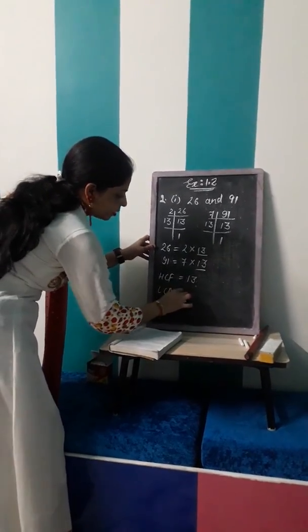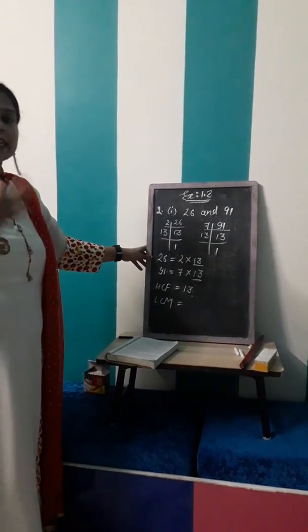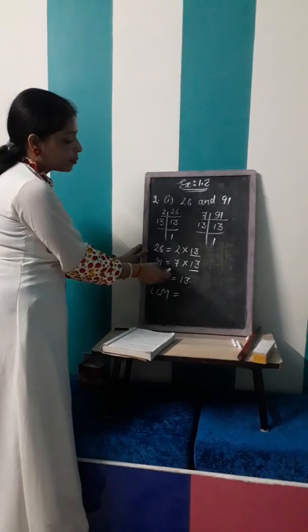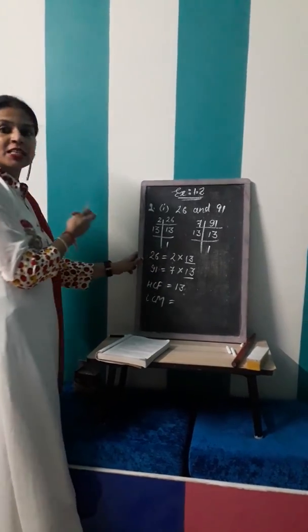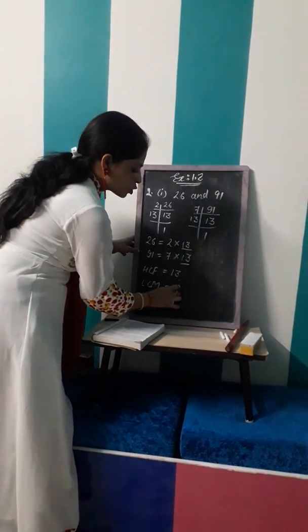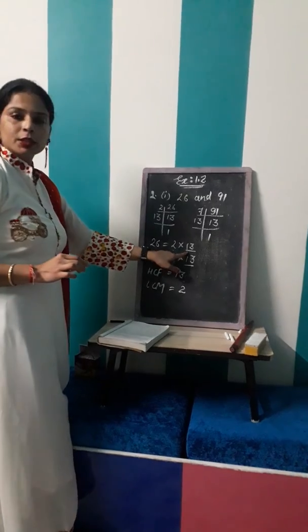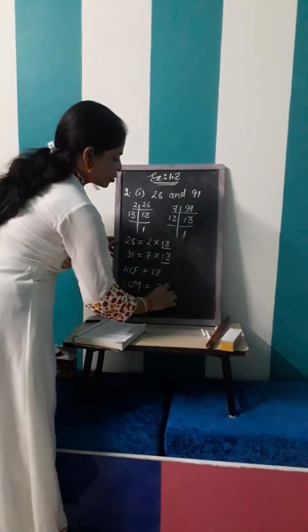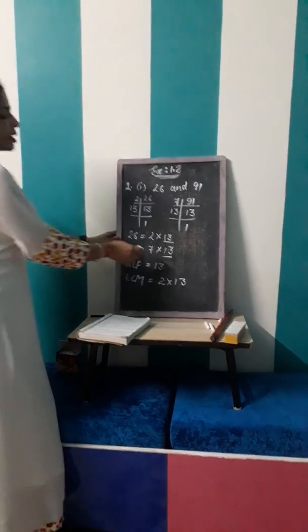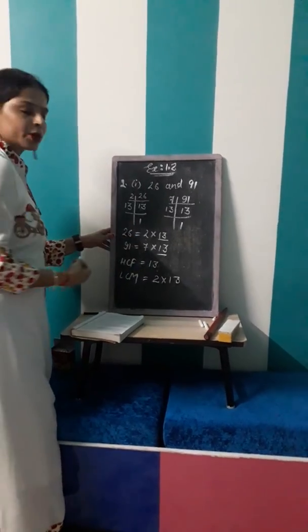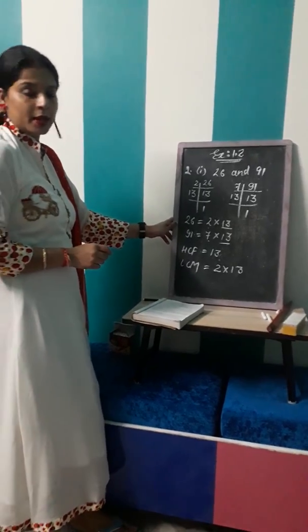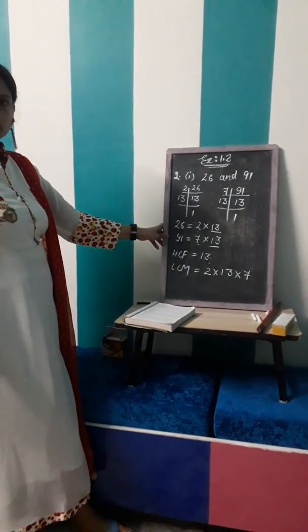So LCM, LCM is the least common multiple, right? So you can see that 2, here it is 1 times, and here it is not, so the maximum times is 1 times. Now we will talk about the 13, here it is 1 times and here it is 1 times, so 1 times is the maximum. And 7, here it is 1 times, so 1 is the maximum. So 7 multiplied by 13 multiplied by 2.